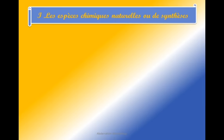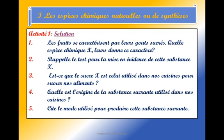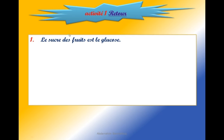Les espèces chimiques naturelles et de synthèse. Activité 1 : Les fruits se caractérisent par leur goût sucré. Quelle espèce chimique X leur donne ce caractère ? Le sucre des fruits est le glucose.